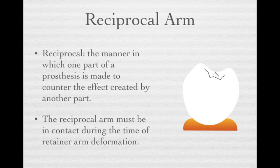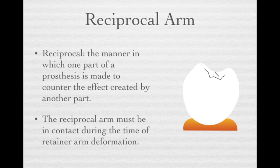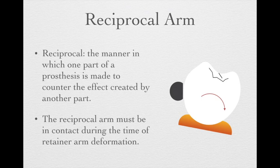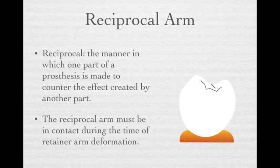Why do we need those specific locations? Let's talk about why we need the reciprocal arm. The reciprocal arm counteracts the forces created by other components of the prosthesis. The reciprocal arm should be in contact during the time of retainer arm deformation. When the direct retainer passes through the height of contour to engage into the undercut, it touches the tooth and provides torquing forces. We need something to counter those torquing forces — that's why we need the reciprocal arm.